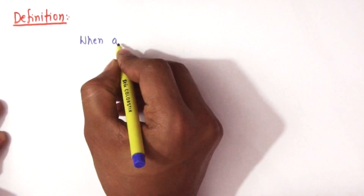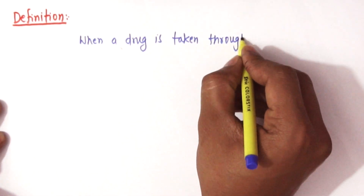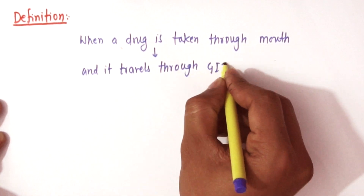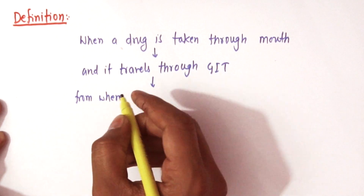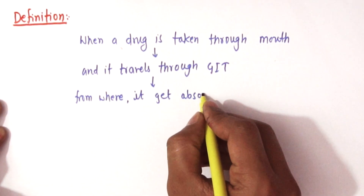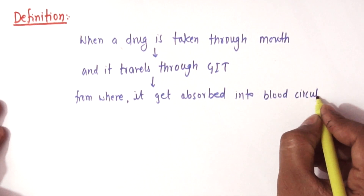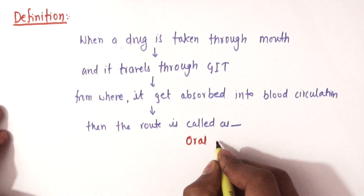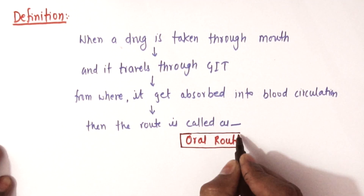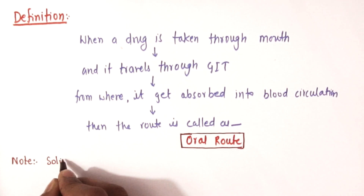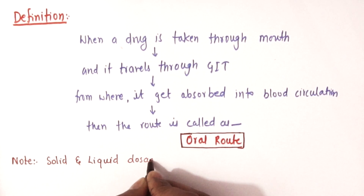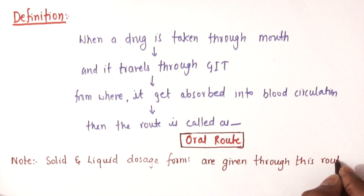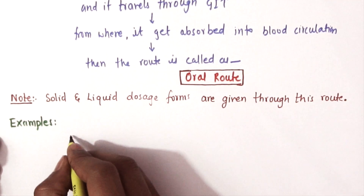We will define oral route as: when a drug is taken through the mouth and travels through the GIT, from where it gets absorbed into blood circulation, that route is called the oral route of drug administration.